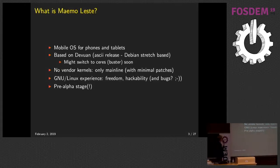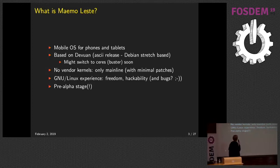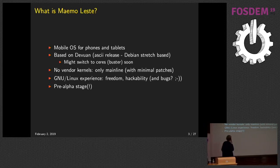Maemo Leste is a mobile OS for phones and tablets, like Android, iOS, UB ports, or what the Purism guys are making. It's based on Dev1, which is based on Debian, but it's a Debian without Systemd. Currently we're using Debian Stretch, or Dev1, but we might switch to the newer upcoming release soon, which will be Ceres or Buster.